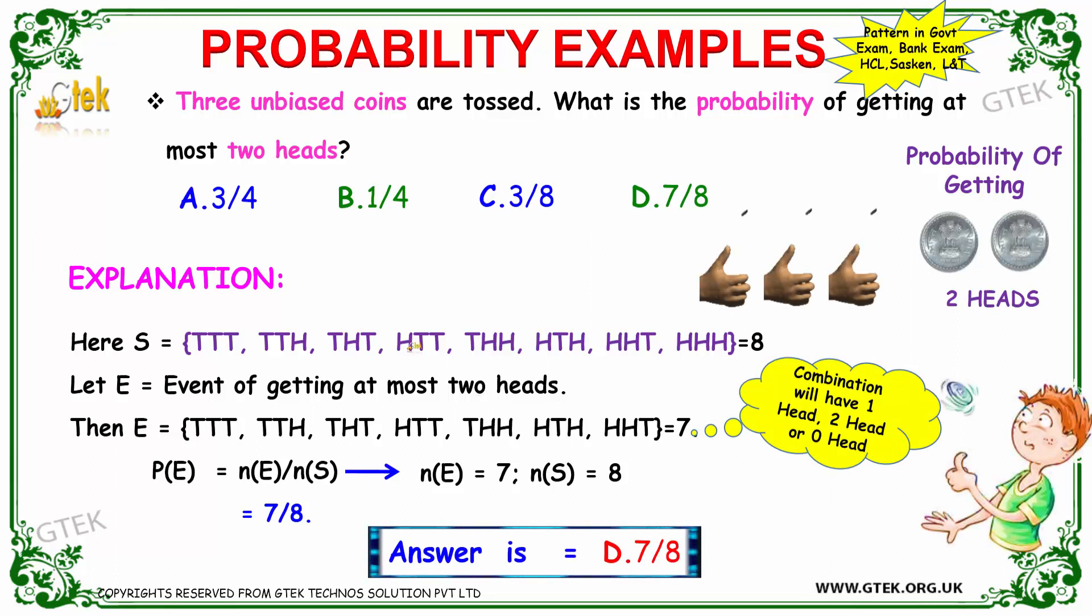Now let's see the sample space. It can be: TTT (three tails), TTH (two tails and one head), THT, HTT (head two tails), THH (tail two heads), HTH (head tail head), HHT (two heads tail), and HHH (three heads).